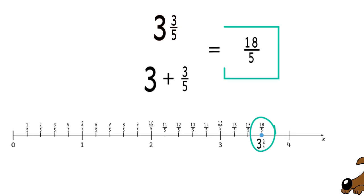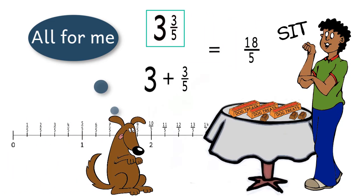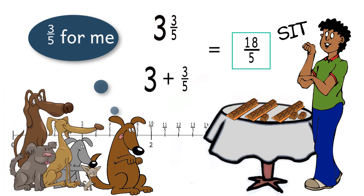So the mixed number 3 and 3 fifths represents the same amount as 18 fifths. Some people call 18 fifths an improper fraction, but there's nothing improper about this fraction. Depending on the situation, sometimes it's more useful to think of it as a mixed number, and sometimes it's more useful to think of it as a fraction.